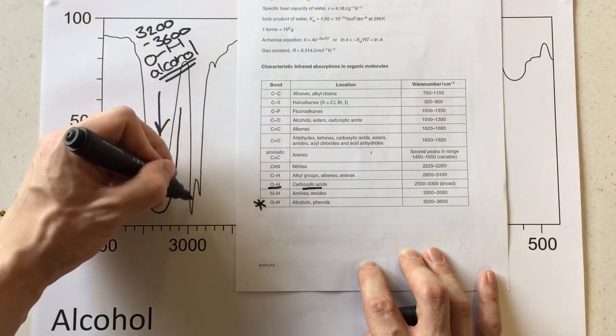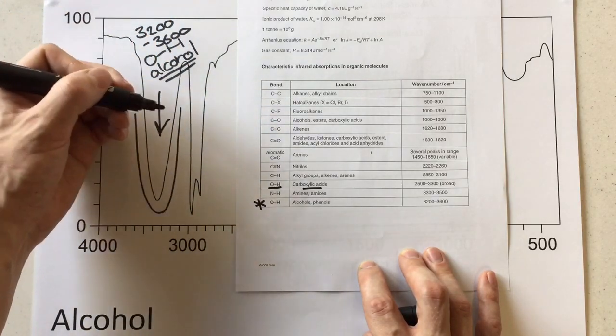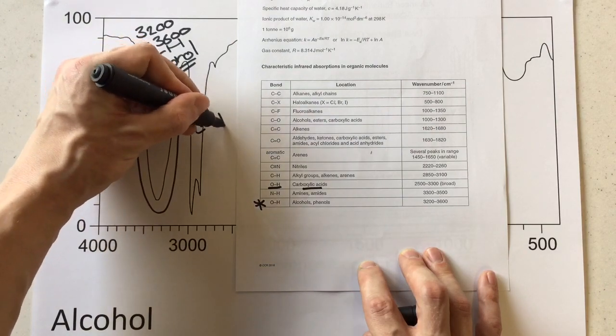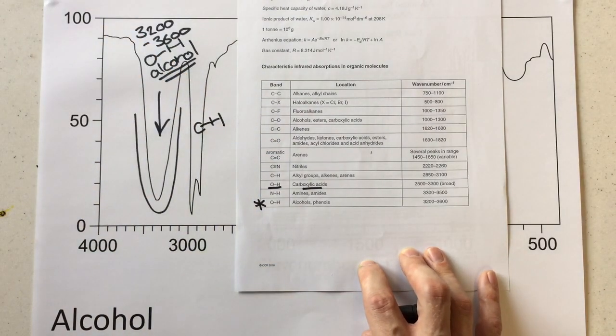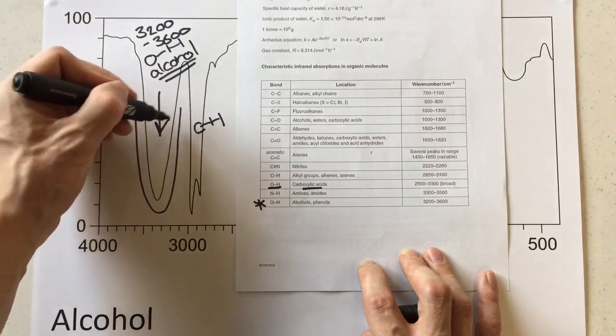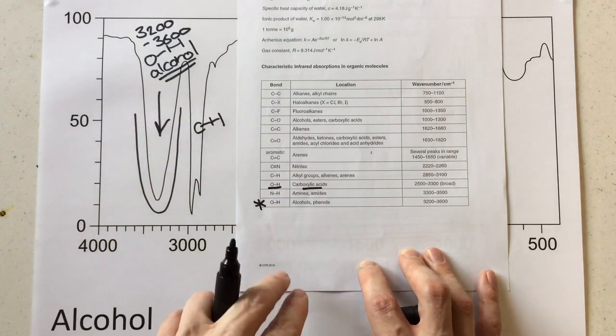Now this skinnier peak here, which is often much more jagged than this, even to the right, this is the CH. That doesn't necessarily identify it as an alcohol, but it's important to notice that these are two separate peaks at the moment.